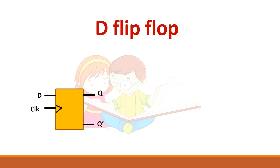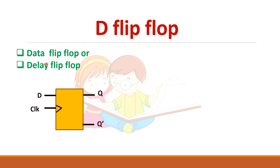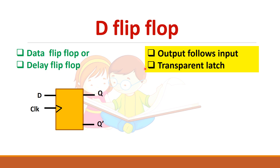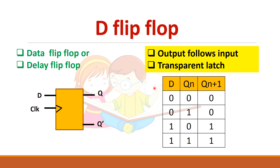To summarize, the D flip-flop is called data flip-flop or delay flip-flop. The output follows the input, and it is also called a transparent latch. This is the truth table of D flip-flop: when input is 0, output will be 0; when input is 1, output is 1.